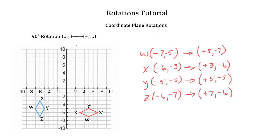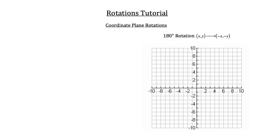So that's how you create a rotation of 90 degrees for a figure — you switch the x and y coordinates, and you flip the sign of the y coordinate to the opposite of whatever it was. Now let's look at the 180 degree rotation. With a 180 degree rotation, we have our point (x, y), and each point we're going to translate to negative x, negative y. So we don't switch the positions — we just switch the sign in front of both x and y.